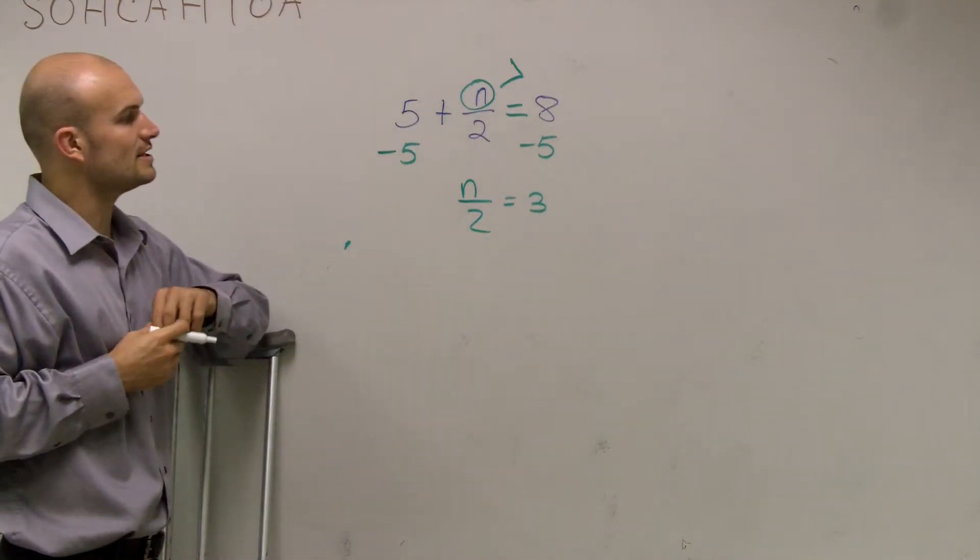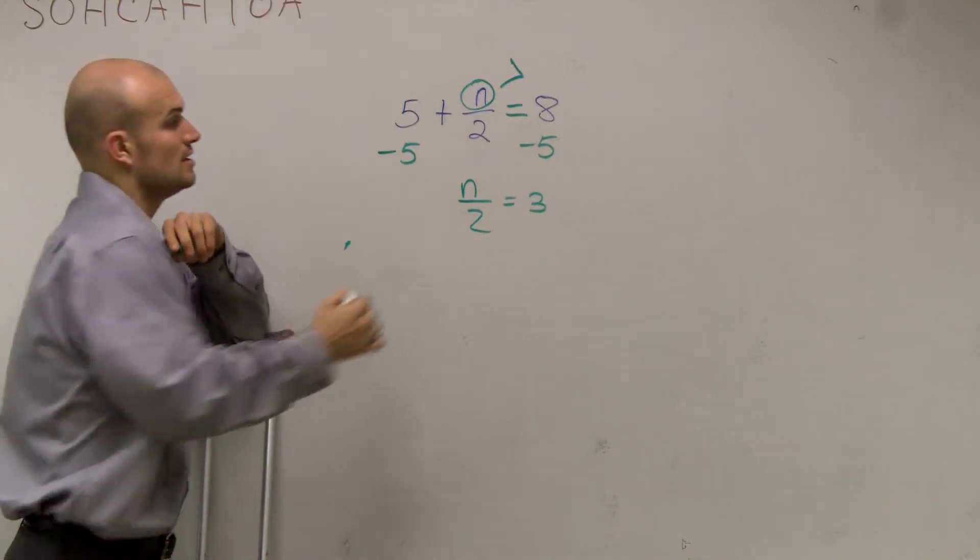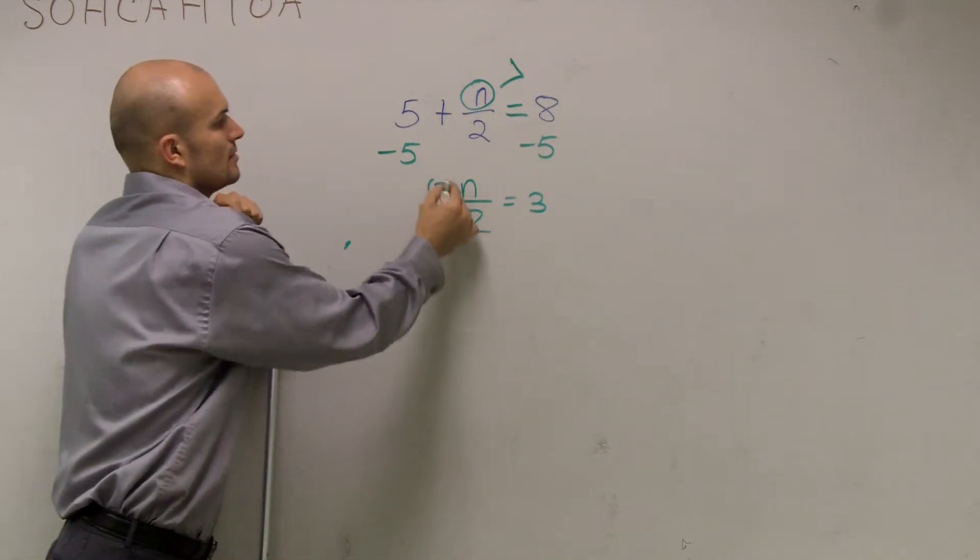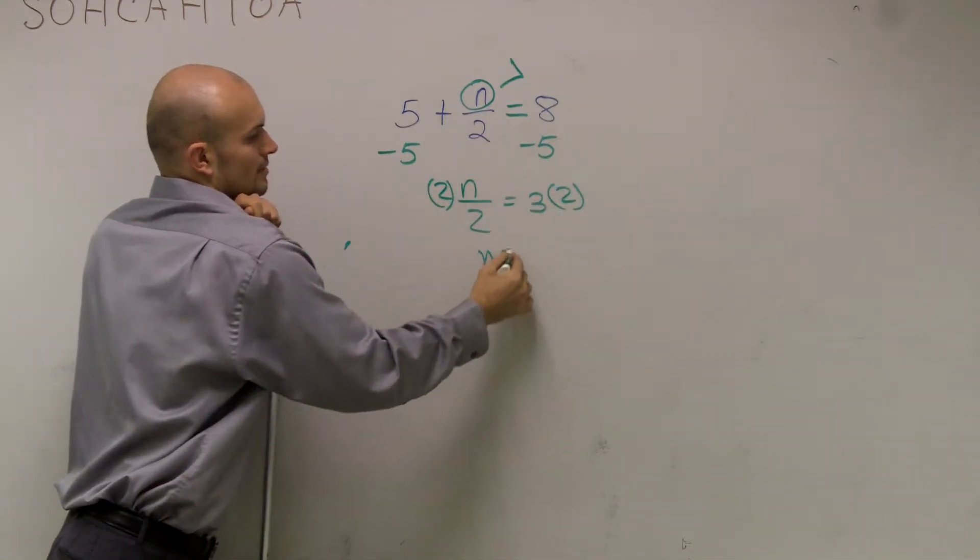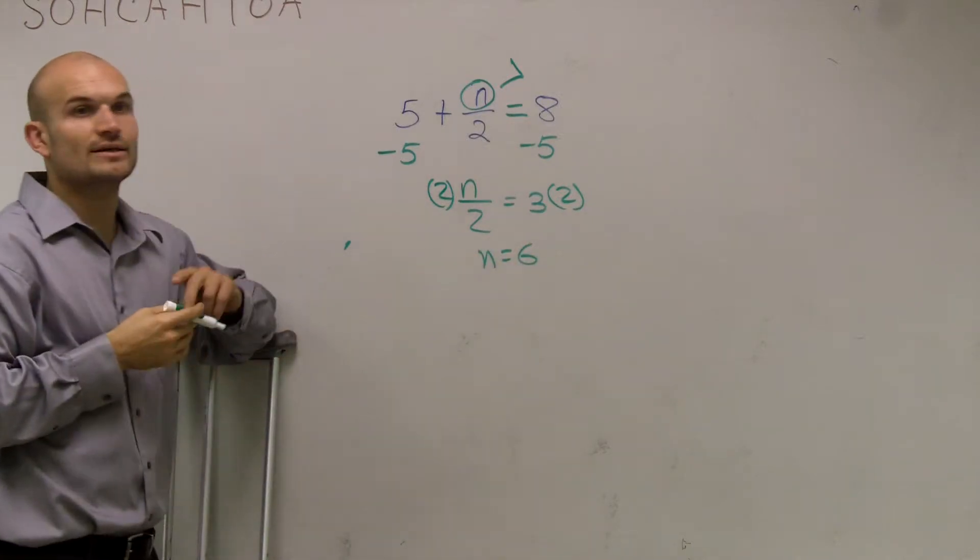Now, I need to undo division of 2. So to undo divide by 2, I multiply by 2 on both sides. Therefore, I get n equals 6.